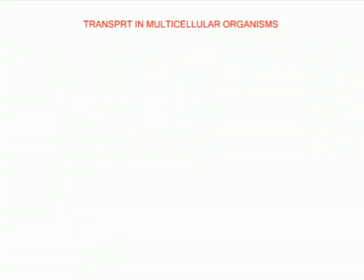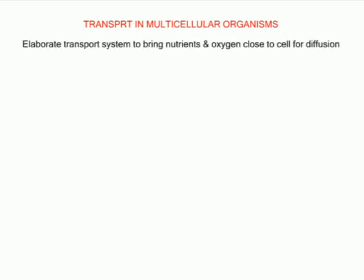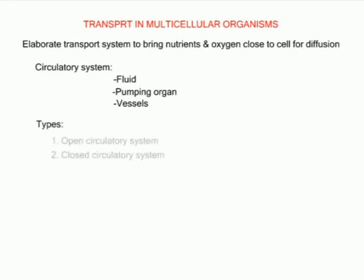In multicellular organisms, most cells are far from the body surface and diffusion cannot achieve the exchange of materials. Multicellular organisms need an elaborate transport system to bring molecules of oxygen and nutrients close enough to cells for diffusion to occur. A circulatory system is made up of a fluid, a pumping organ and vessels. There are two types of circulatory systems: the open and the closed circulatory systems.